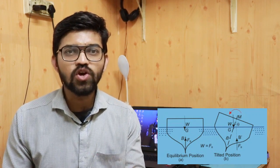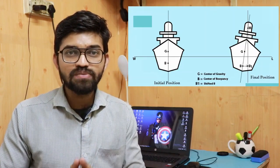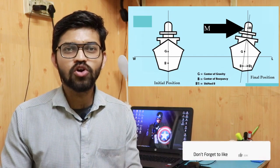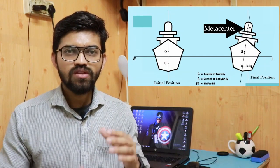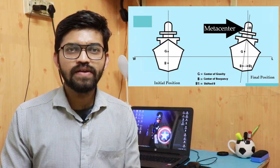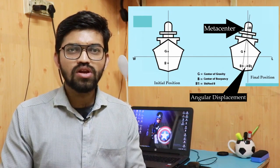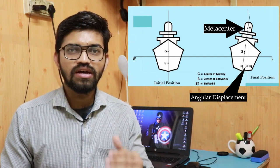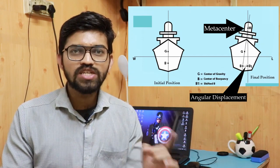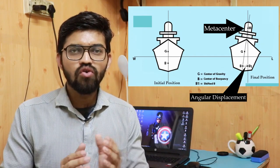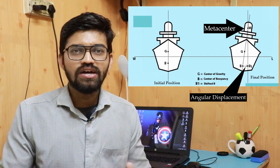There will be some angular displacement which occurs in the ship. The point at which this angular displacement occurs is called the metacenter, denoted by M. When a body is floating in a liquid and a small angular displacement is given, the line of action of the buoyancy force and the center of gravity are initially in a straight line, but after the displacement the buoyancy force shifts to the right side or the left side.